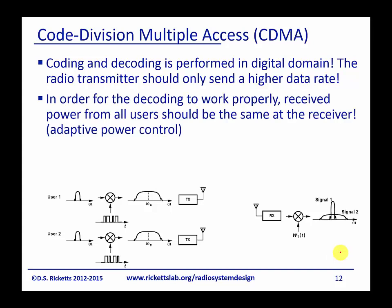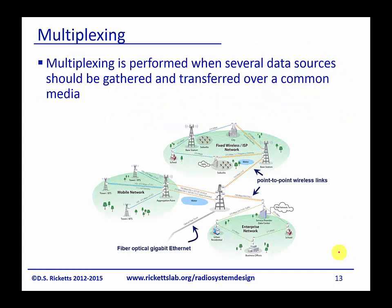One caveat is that the receiver would like to receive all signals at the same power, but obviously they're not when they hit the antenna, so the receiver normalizes the power internally before applying the codes. Multiplexing is a different concept from multiple access — it's about taking several pieces of data and putting them into a single stream. An example would be a base station collecting data from all the cell phones and sending it through a single transmit mechanism, such as aggregating into a fiber optic cable.